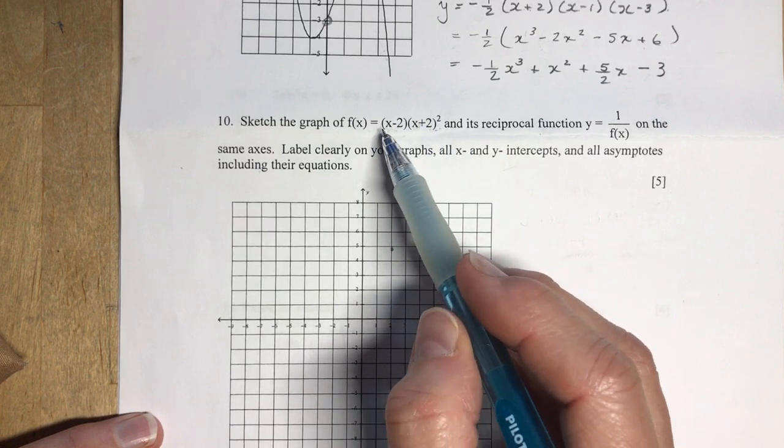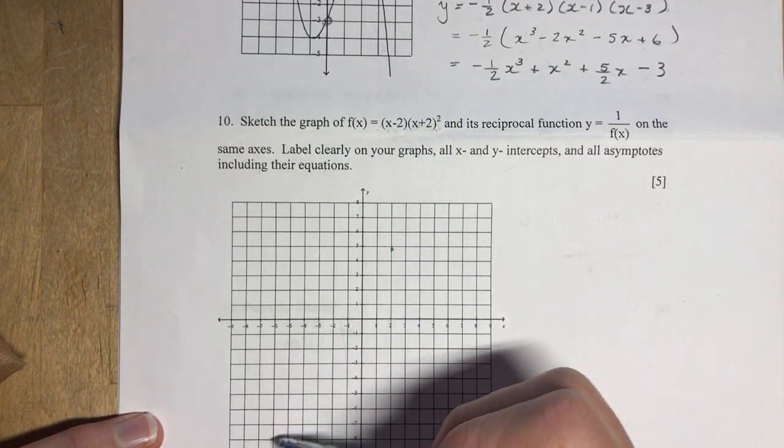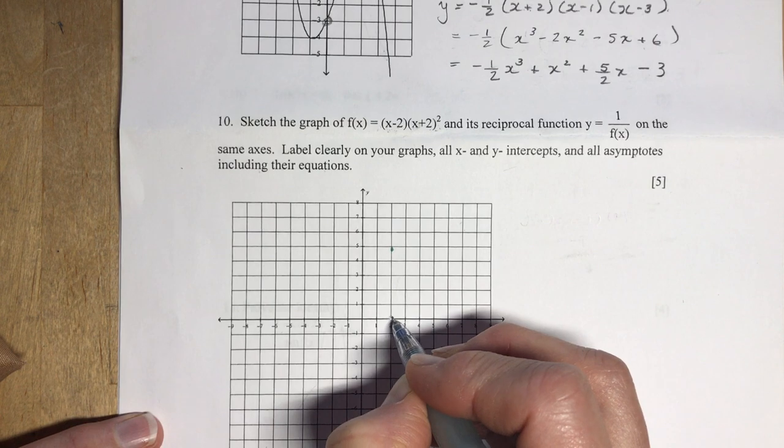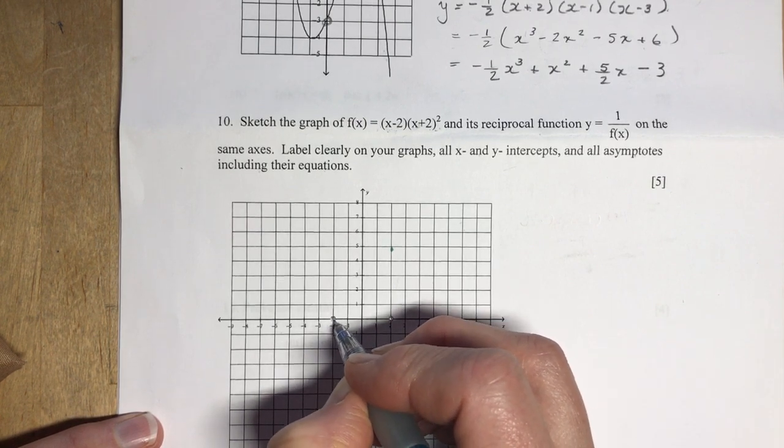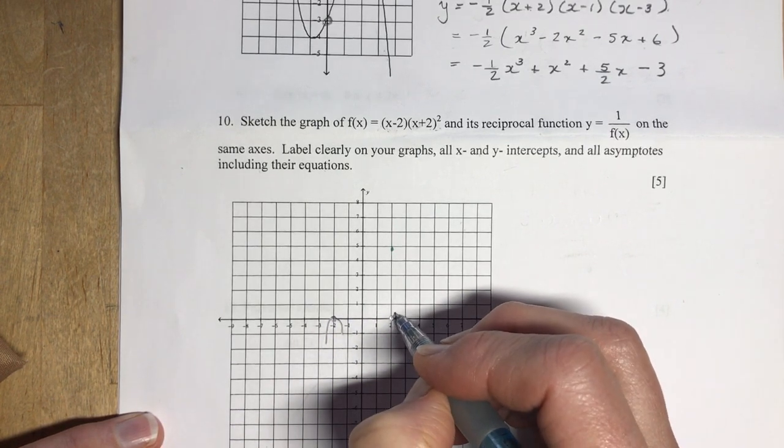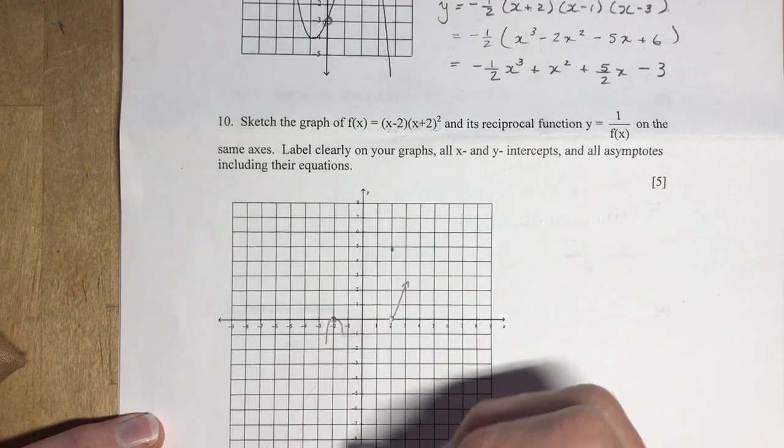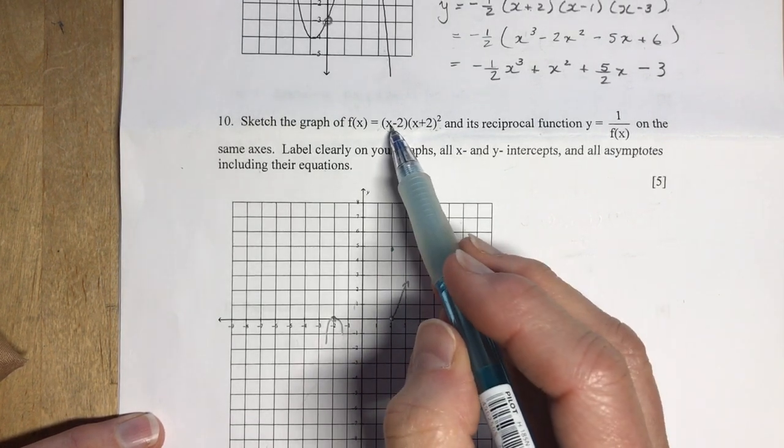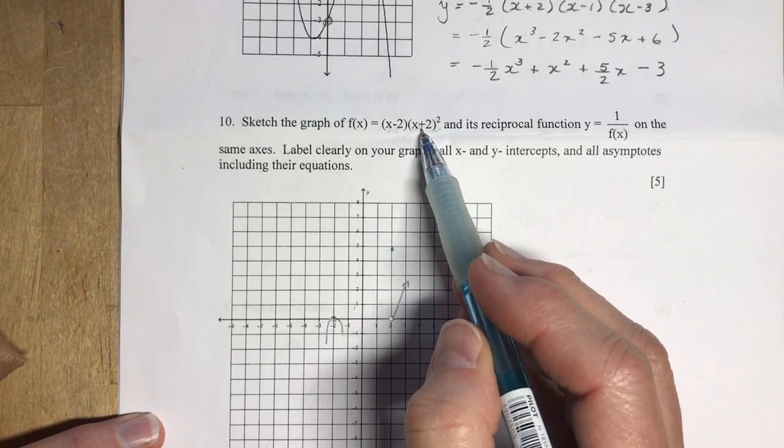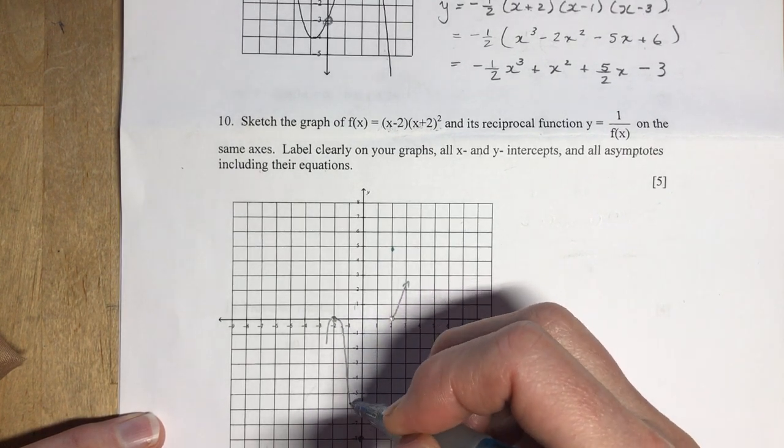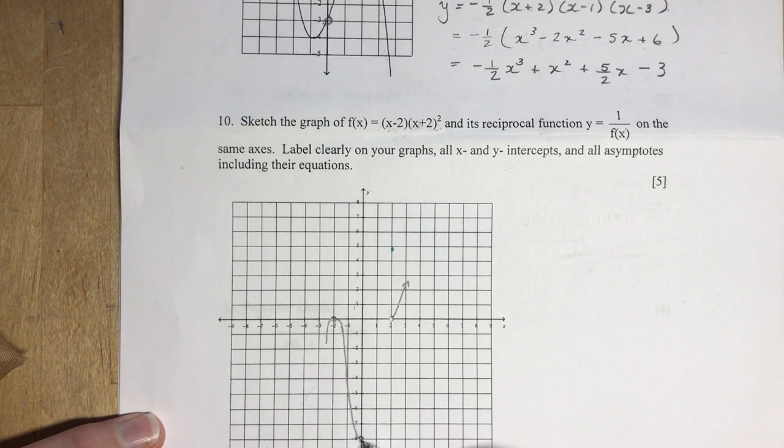This function here is a cubic function. Again, we have an x times an x squared would be x cubed. It has a positive leading coefficient which means it's going to start in quadrant three and end in quadrant one. So I'm going to put my x-intercepts on here, noting that this is a double root. So it's going to go like this here. And this one is going to just pass right through. So I need some other points for accuracy here.